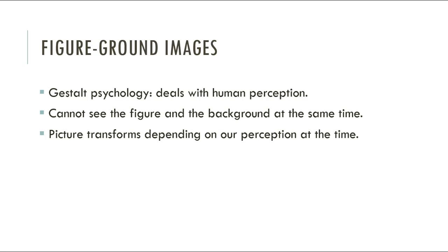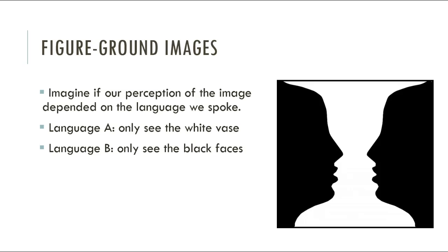How is this relevant to Story of Your Life? Well, imagine if our perception of this image depended on the language that we spoke — imagine that speakers of language A could only see the white vase, and speakers of language B could only see the black faces. As you read in the assigned articles, we do have some evidence that people's language shapes their thoughts and behavior. It's a controversial theory — not all linguists buy into it. Some believe there's no connection between language and thought; some believe there's a very weak connection. Nonetheless, to understand what Chiang is doing, we do need to buy into this theory. It serves as the basis of the story.